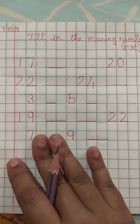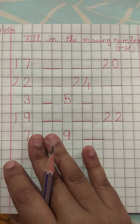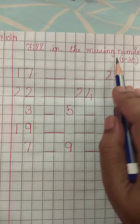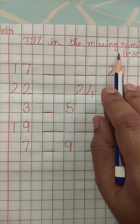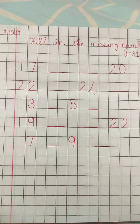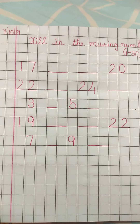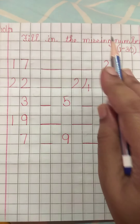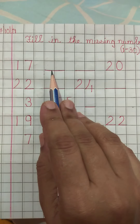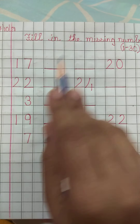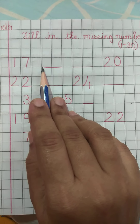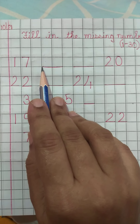Okay children, today we will revise missing numbers from 1 to 30. Now children, you have to fill the blanks by writing the missing numbers. Okay, now let's start.